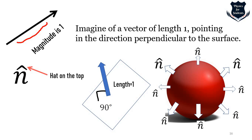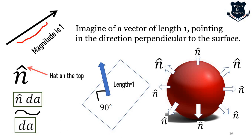For a sphere, these unit normal vectors spread radially outward. The expression E·n-hat represents the component of the electric field perpendicular to the surface. Since the unit normal has length one, writing E·n-hat·dA is essentially the same as E·dA. By convention, for a closed surface, the unit normal vectors point outward.